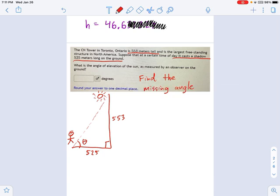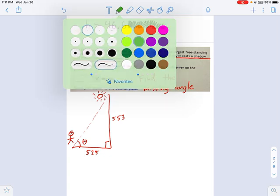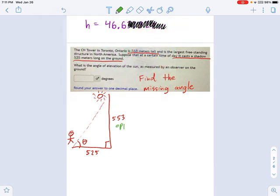Back to our problem. You label your sides as opposite and adjacent. So which trig function relates opposite and adjacent together? I hope you're thinking about tangent. Tangent theta equals opposite over adjacent. So now we just plug in the values we know. The opposite is 553 and the adjacent is 525.